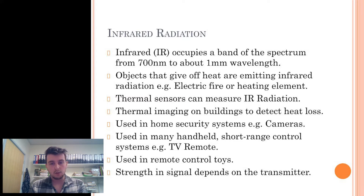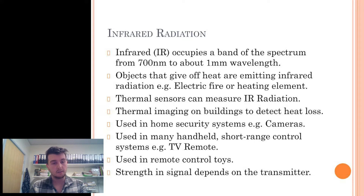The distance an infrared signal can travel varies based on the strength of the transmitter, but is usually around a meter for household devices. There must also be a direct line of sight between the transmitter and receiver. If there is a wall or a large object between them, the signal can be reflected.